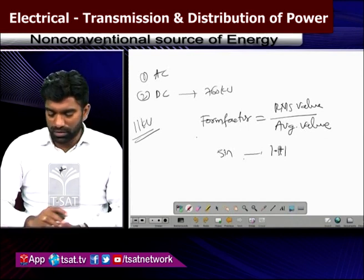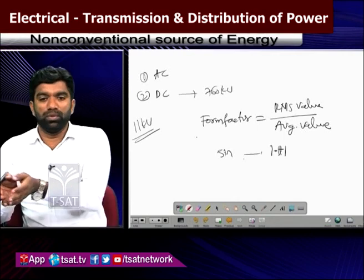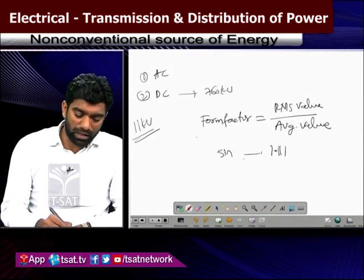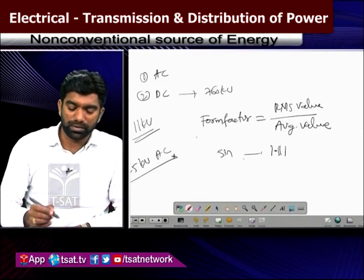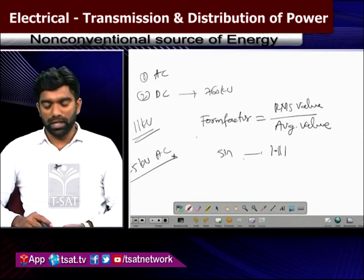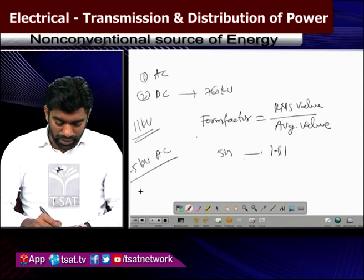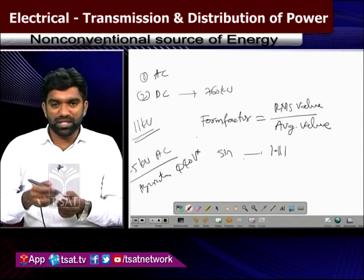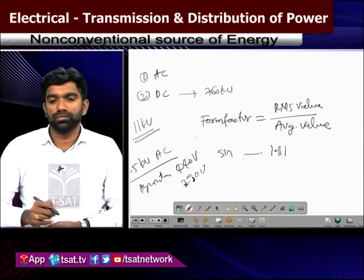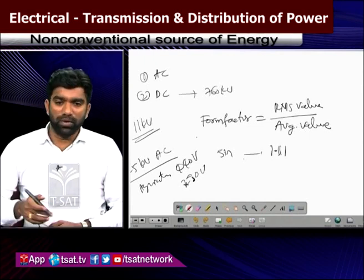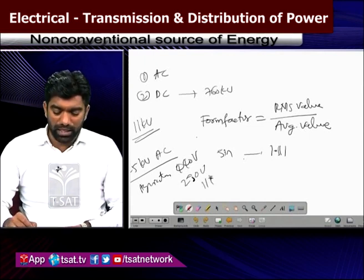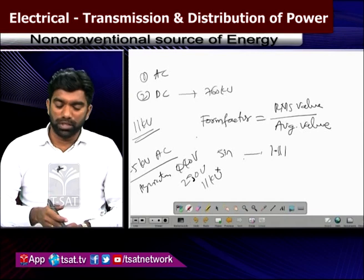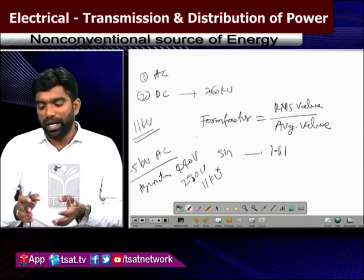These are the different methods to distribute various voltages to different consumers. For railways, the voltage is about 25 kilo volts AC. For agriculture areas, it is around 440 volts. For domestic consumers, it is 230 volts or 220 volts. Depending upon different consumer requirements, power is distributed accordingly.